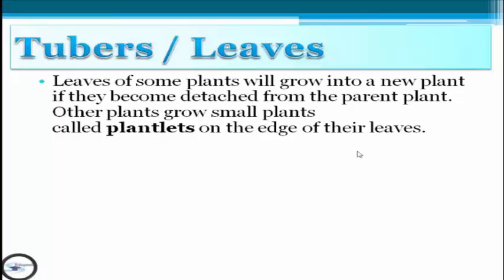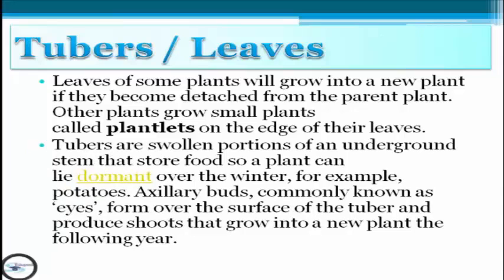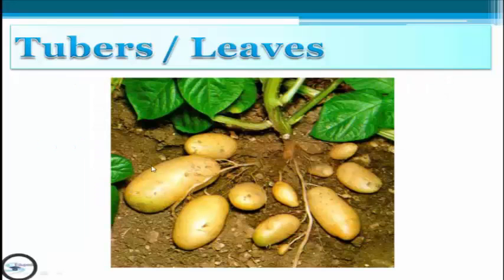The third example is tubers or leaves. Leaves of some plants will grow into a new plant if they become detached from the parent. Other plants grow small plants called plantlets on the edge of their leaves. Tubers are swollen portions of an underground stem that store food so a plant can lie dormant over the winter. For example, potatoes — axillary buds commonly known as eyes form over the surface of the tubers and produce shoots that grow into a new plant the following year. As you can see, this is the tubers — the potato.